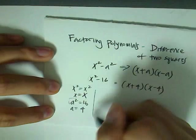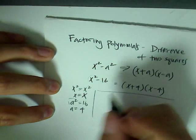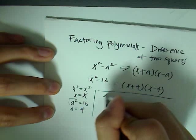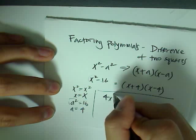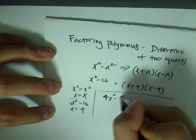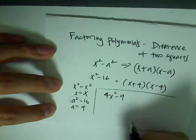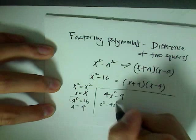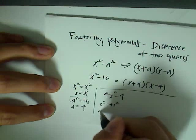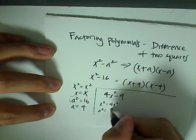To show you another example, let's use the equation 4x squared minus 9. So in this case, you have x squared being equal to 4x squared and a squared equals to 9.